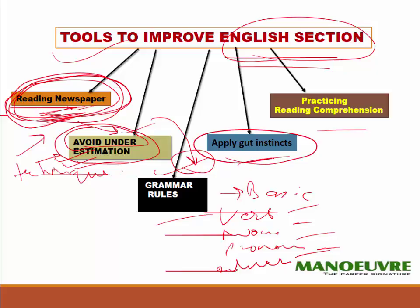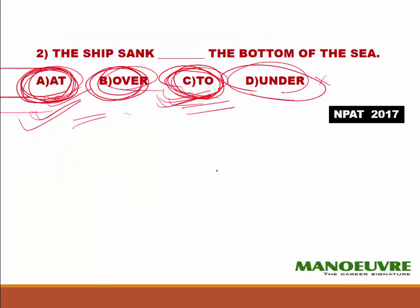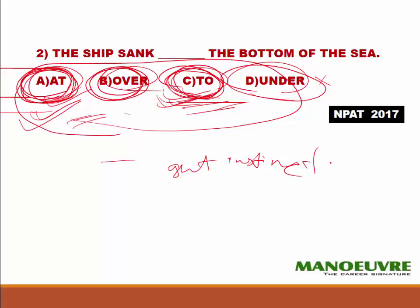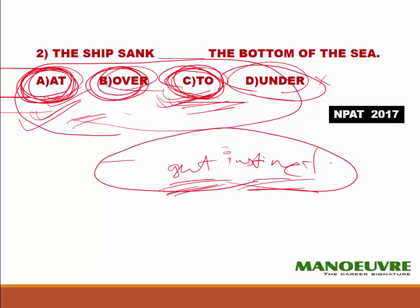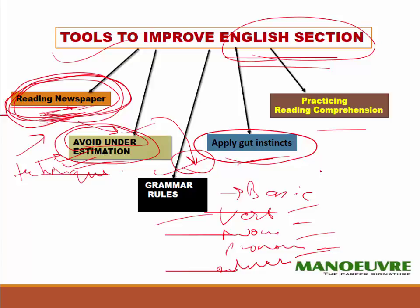The next tool is to apply your gut instincts. Whenever you see a sentence like the ones we discussed — where two options were very close, like 'to' and 'at' — and you feel a little confused, this kind of question requires you to apply your gut instinct. Even if you know the grammar well but are still confused, go with your gut. At times it may go wrong, but your correct application of gut instincts will generally not let you down, and that mark can be recovered elsewhere if your overall preparation is strong.